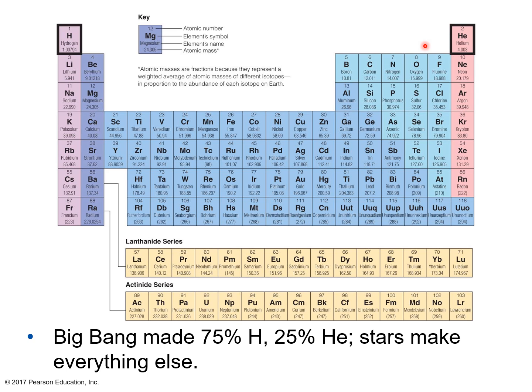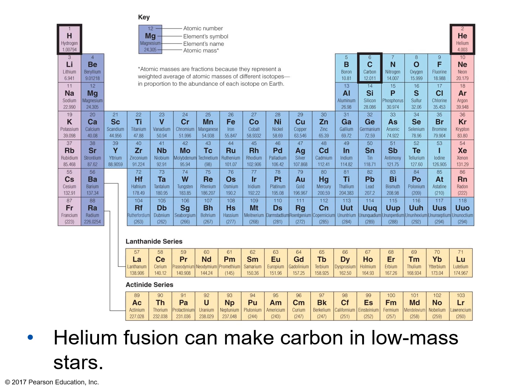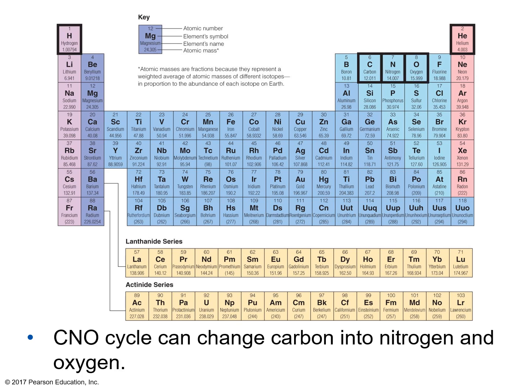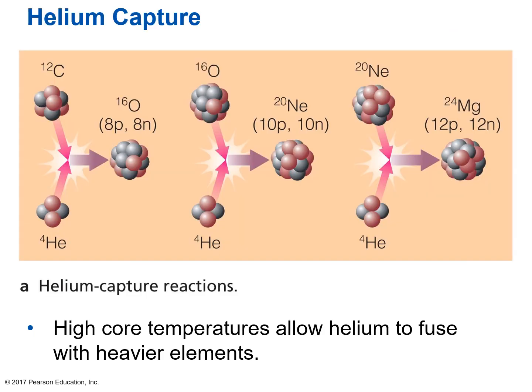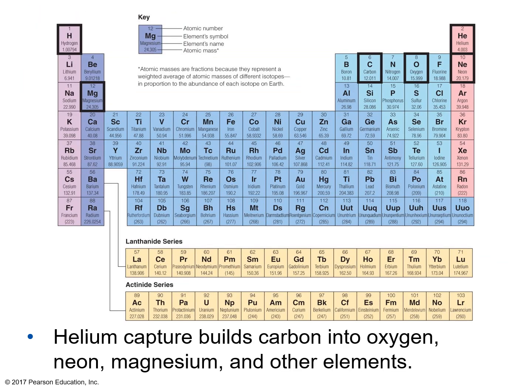Helium fusion can make carbon even in low-mass stars. The CNO cycle can change carbon into nitrogen and oxygen. Helium capture — where high core temperatures inside high-mass stars allow helium to fuse with heavier elements — builds carbon into oxygen, neon, magnesium, and other elements. Unlike low-mass stars where the carbon core can't get hot enough to fuse further, high-mass stars have core temperatures high enough to fuse heavier elements.